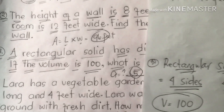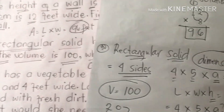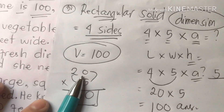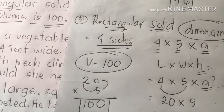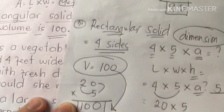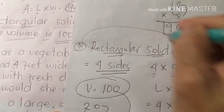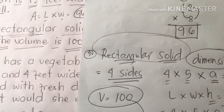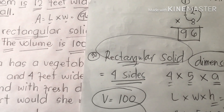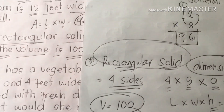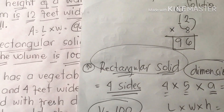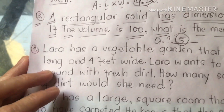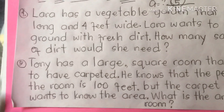The answer for number three is A equals 5. When you check it, multiply 20 times 5 — the result is 100, equivalent to the volume of the rectangular solid. So 4 times 5 is 20, and 20 times 5 is 100. It's correct. Now let's proceed to number four.